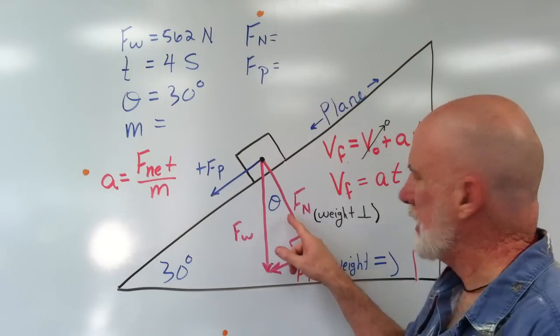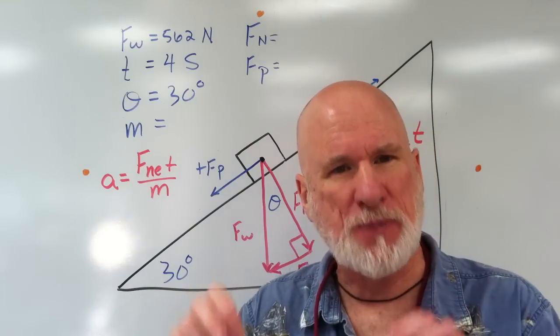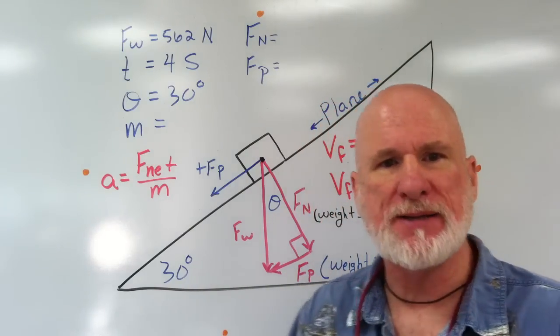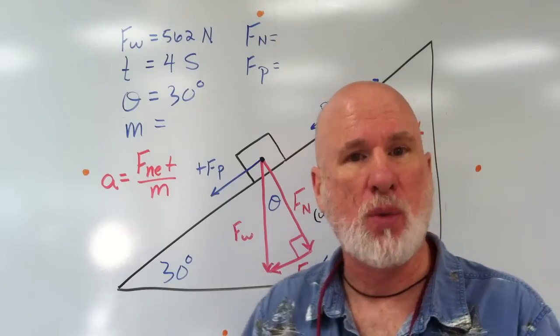This is Fn, which is actually the weight perpendicular to the plane, and Fp is the weight parallel to the plane. Fw is the weight.